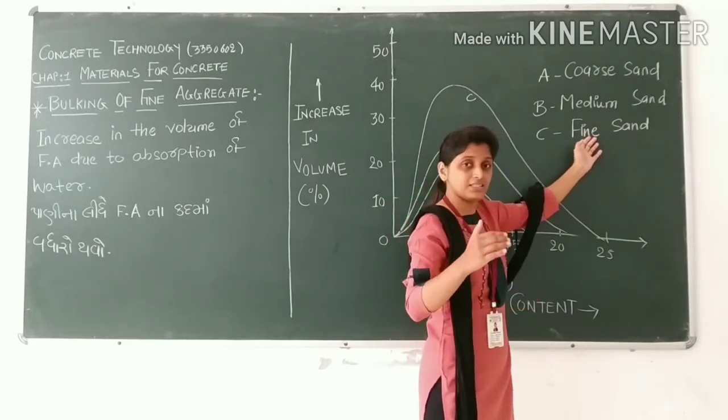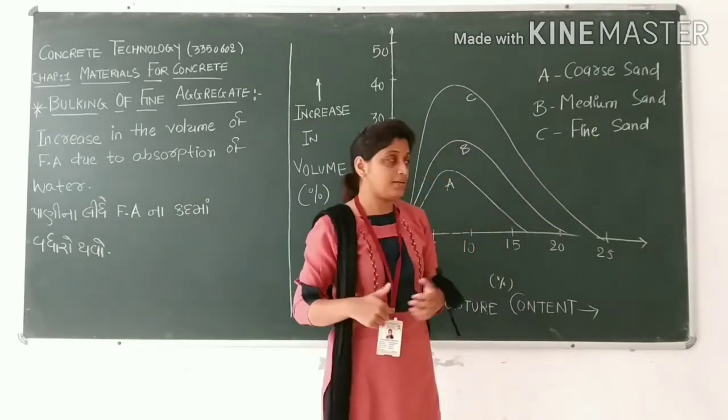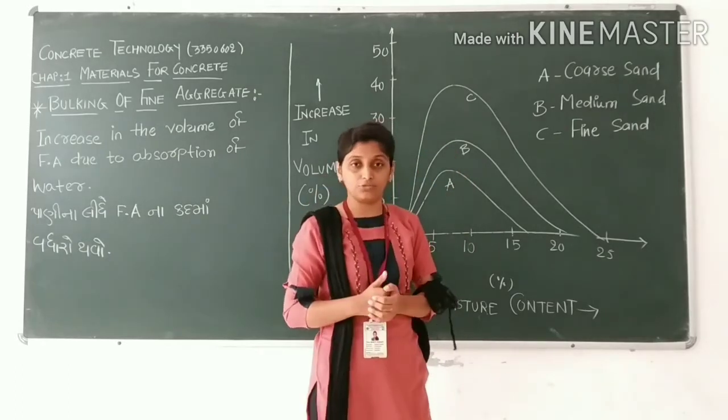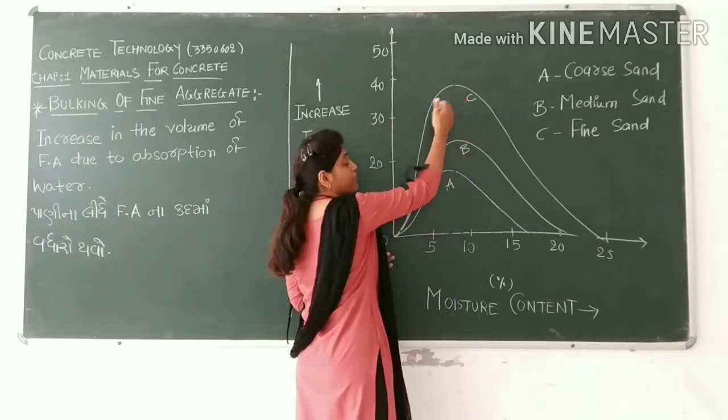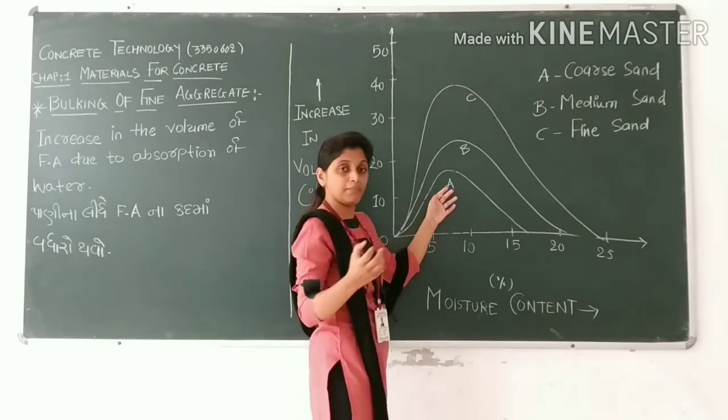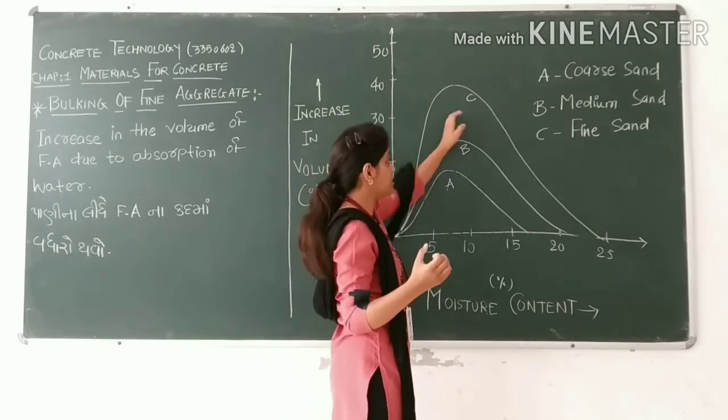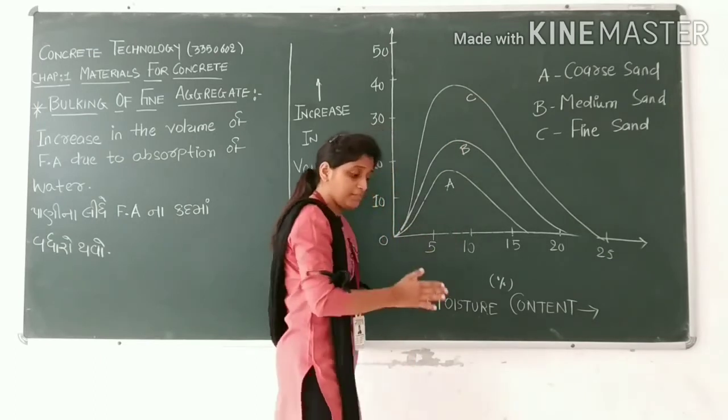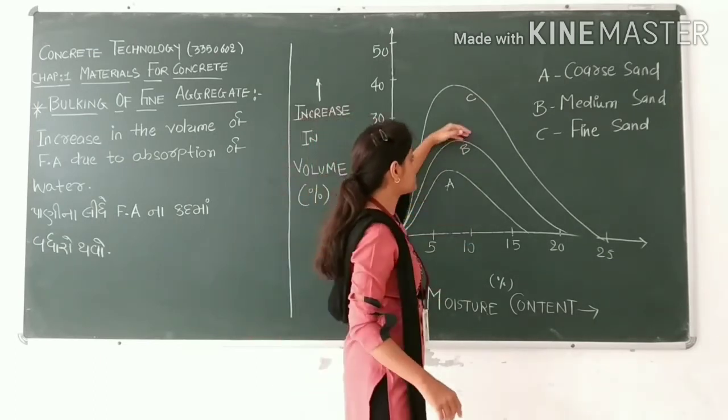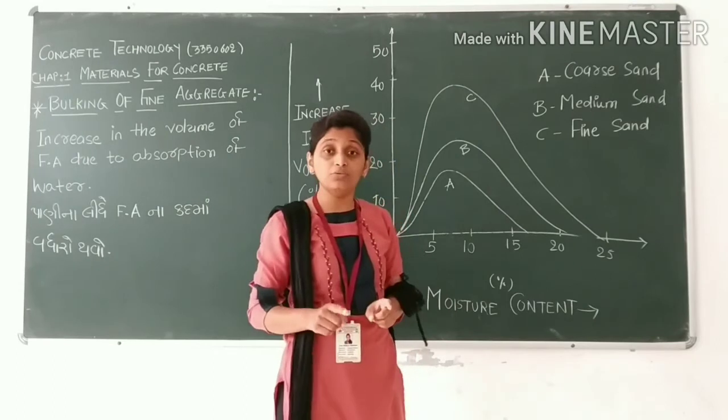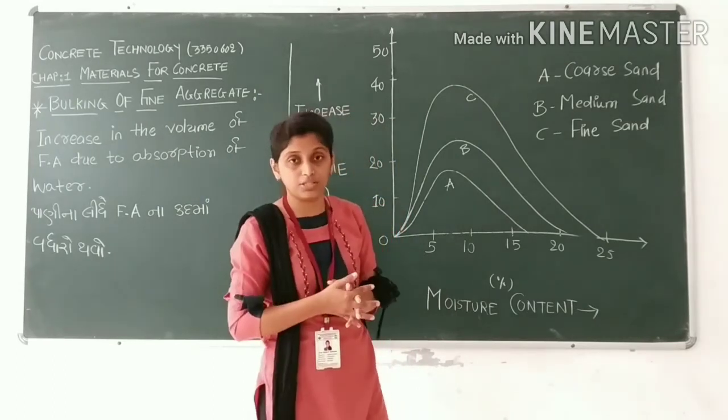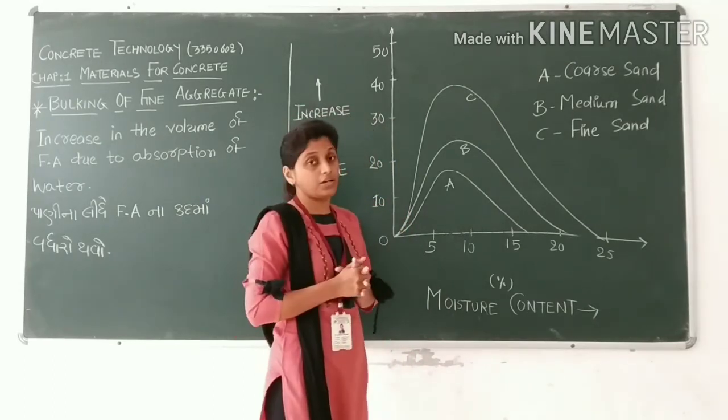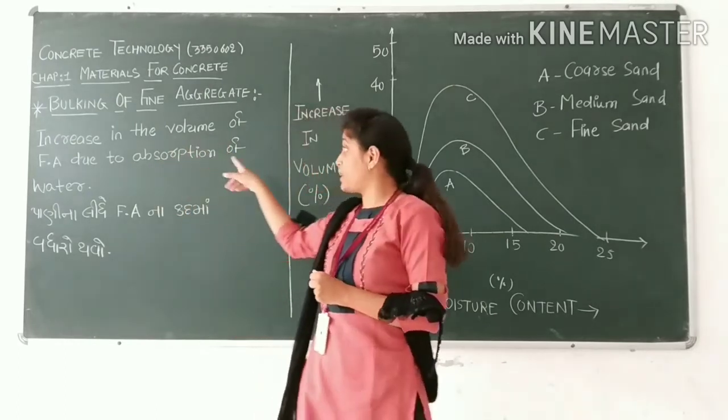The smaller the particle size, the greater the bulking. Coarse sand has larger particle size and fine sand has smaller particle size. Therefore, fine sand shows more bulking than coarse sand.